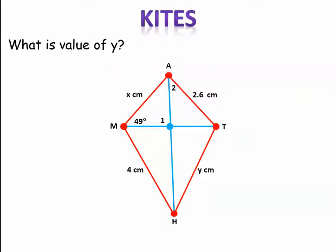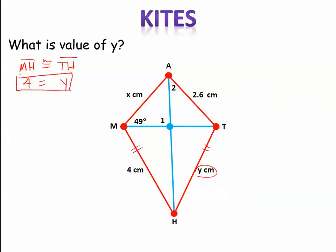Then they want to know what Y is, which is down here. Again, we learned that these bottom segments are going to be congruent. So we know that segment MH is congruent to segment TH. MH is 4, and TH is Y. So we already have our answer: Y equals 4.